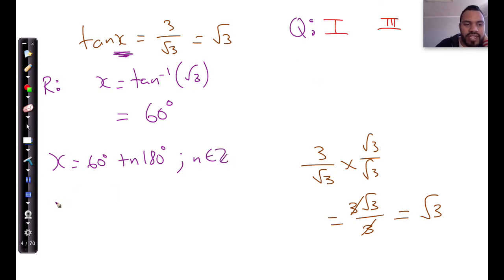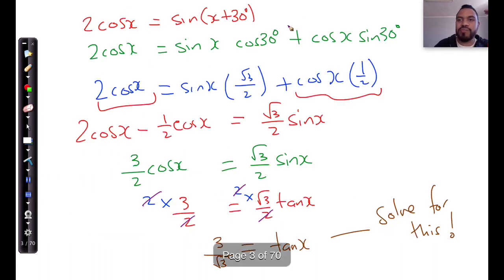In the third quadrant, we say x is equal to 180 plus 60 degrees plus n times 180, and this gives us 240 degrees plus n times 180, such that n is an element of the integers. And there's a general solution solved for first and third quadrant using a compound angle identity as well.